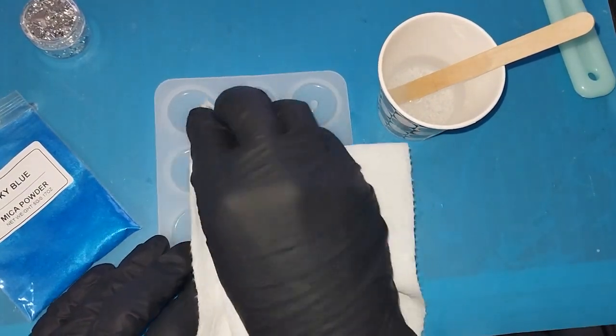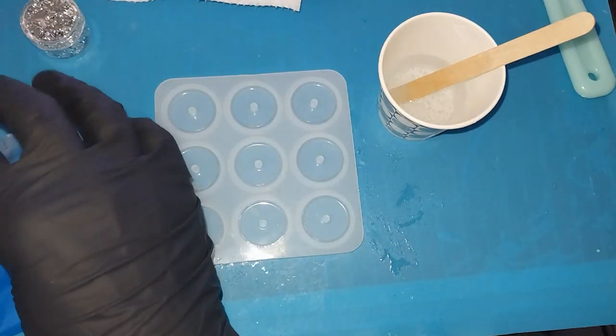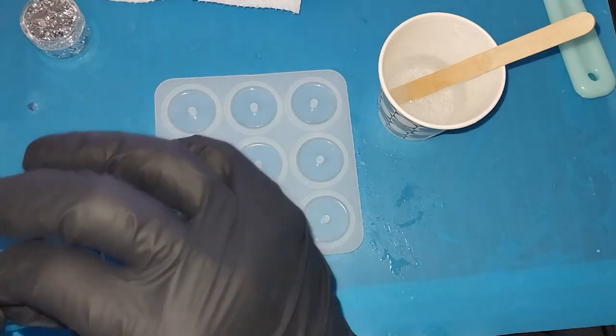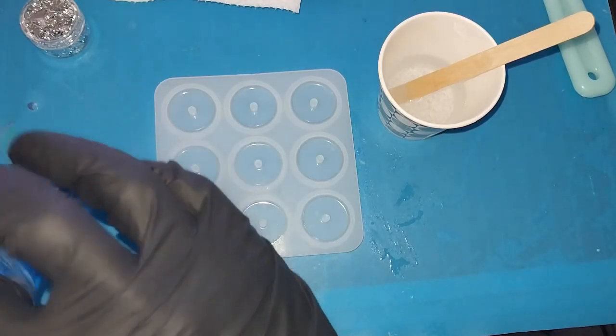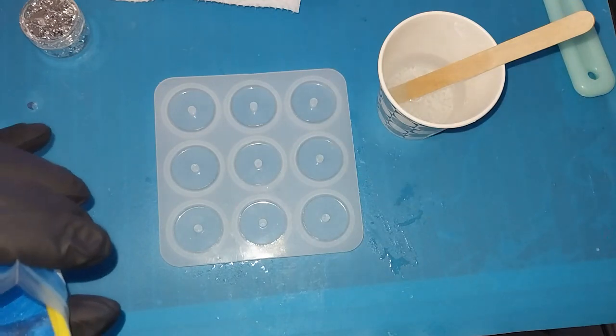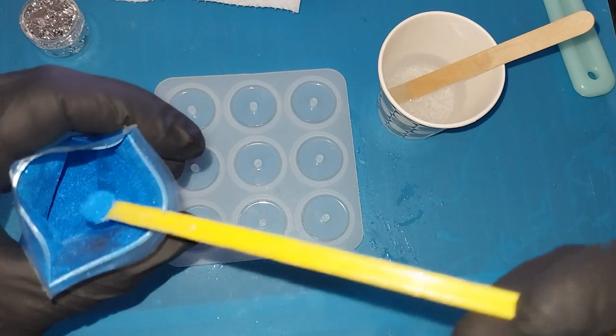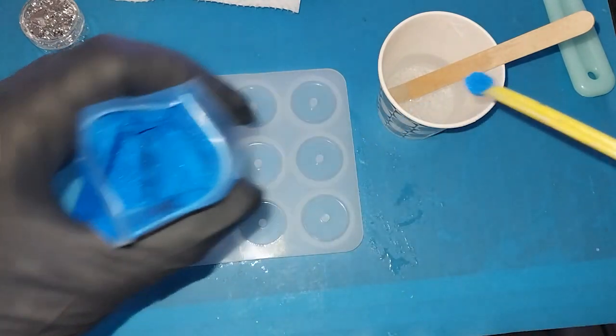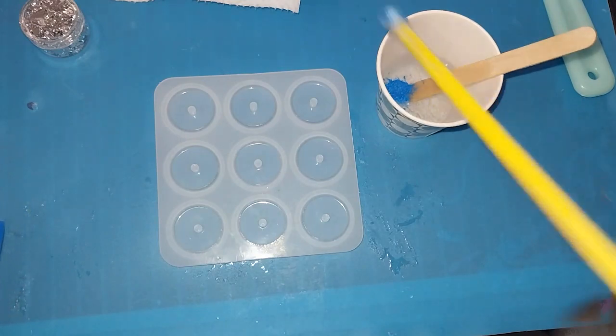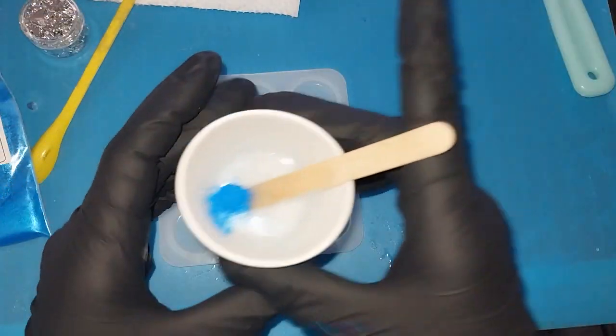All right, I just saw some lint in here, so I'm trying to get that out of there. So what I'm going to do is just add our sky blue, which is oddly appropriate, Air Force sky, to the resin. I'm just going to use my little scoop and just use one little scoop and see how that looks.